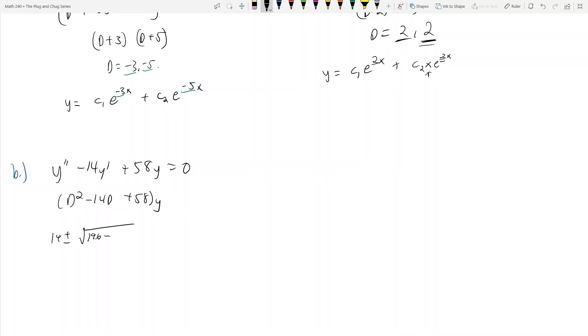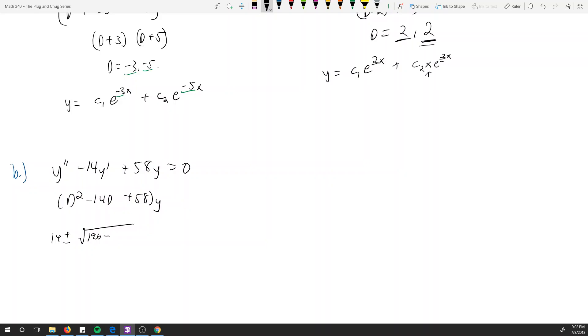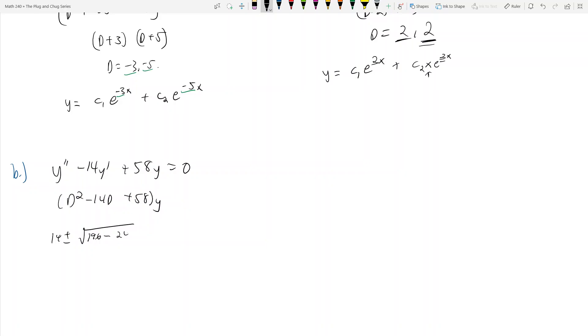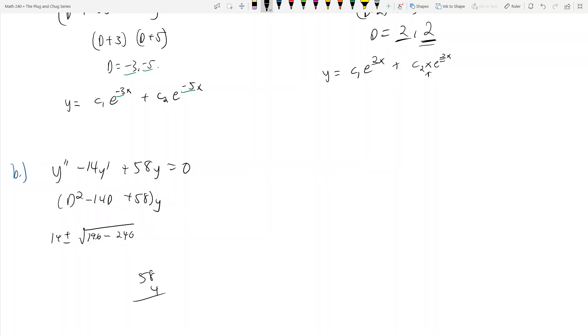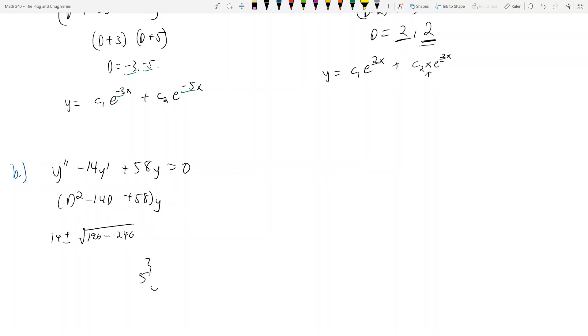Don't try to factor that. We get 14 plus or minus the square root of B squared, 196 minus 4AC, 4 times 58 is 232, all over 2A. This actually becomes 7 plus or minus 3i. D is equal to 7 plus or minus 3i.